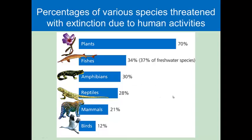Looking at percentages of various species threatened with extinction due to human activities — people may not know this — but as far as animal species are concerned, it's fish. That speaks a lot about our stewardship of waterways. I had an opportunity to work with the U.S. Fish and Wildlife Service in 2012. 95% of the species on the list were fish — a lot of those were freshwater mussels, fish, and other water-dwelling animals. It speaks a lot about how we value our water resources.